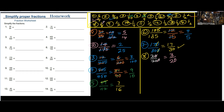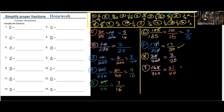Number 9 — we have 168 over 320. We can use 8 here. 8 into 168: 8 into 16 is 2, 8 into 8 is 1, giving 21. 8 into 320: 8 into 32 is 4, giving 40. So we have 21 over 40, and there is nothing common to 21 and 40, so this becomes the answer.